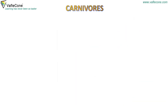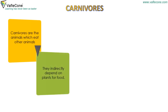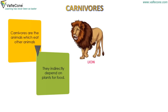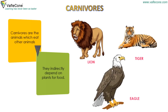Carnivorous are the animals which eat other animals. They indirectly depend on plants for food. For example, lion, tiger, eagle, etc.